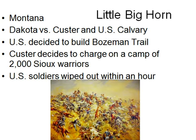The Battle of the Little Bighorn happens in Montana — the Dakota Native Americans versus Custer and the U.S. Cavalry. The United States had found gold in the Black Hills in western South Dakota, causing a huge influx of migration to that area. The U.S. also wanted to build a Bozeman Trail right through that area heading further west. The Native Americans disagreed and began attacking settlers, so Custer was assigned to handle the situation. Due to bad intelligence and his own arrogance, Custer charged on a camp that turned out to hold 2,000 Sioux warriors. The U.S. soldiers and Custer were completely wiped out within an hour — this is also known as Custer's Last Stand.